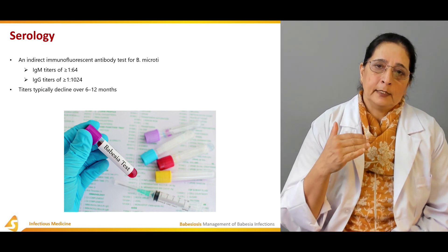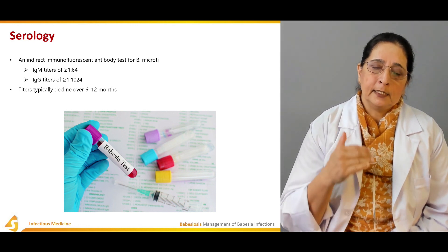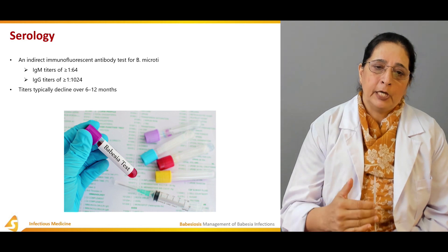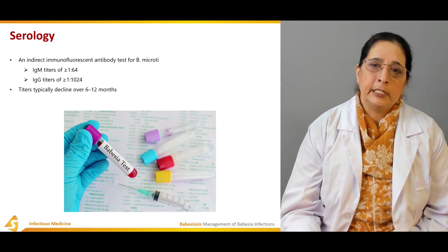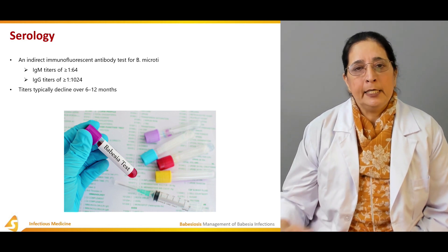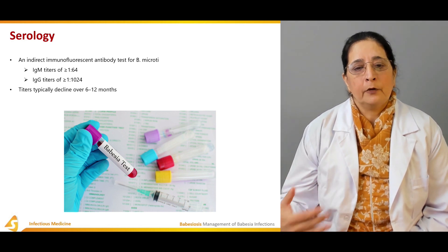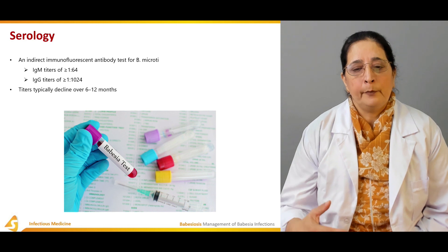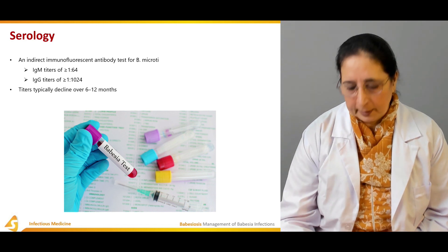Initially there are high titers of both IgM and IgG, but ultimately over a period of 6 to 12 months, these titers decrease.